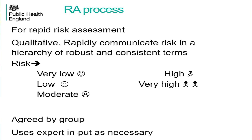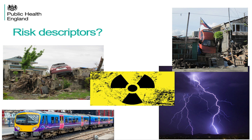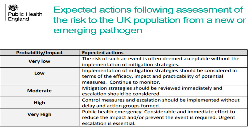Basically, why we do a risk assessment is to rapidly communicate risk in a hierarchy of robust and consistent terms. We tend to use the five OIE categories, which are shown here, though the Joint Risk Assessment uses a slightly modified form. We stuck with OIE and use five categories, all agreed by the group doing the risk assessment, using expert input where possible. When talking to policymakers, they want to know what 'low' means — is it the same as being struck by lightning? We worked with vets to come up with risk descriptors, but never really came up with useful terms.